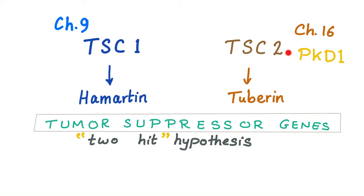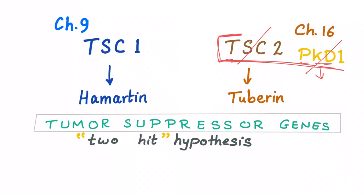By the way, TSC2 is very close to another gene called PKD1, which is responsible for polycystic kidney disease. So if there is a deletion that is major and extensive enough to hit both genes, you will have a patient with tuberous sclerosis who also suffers from polycystic kidney disease.